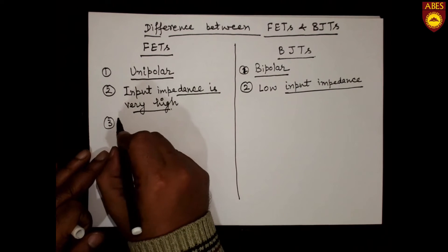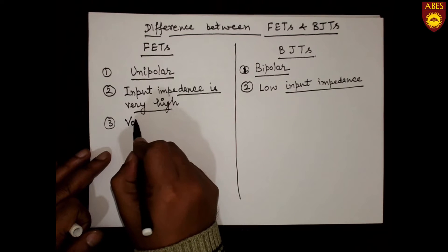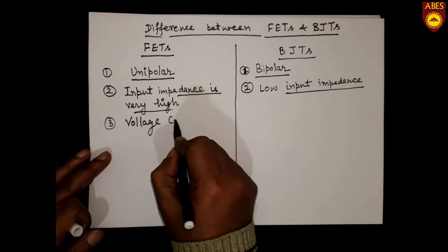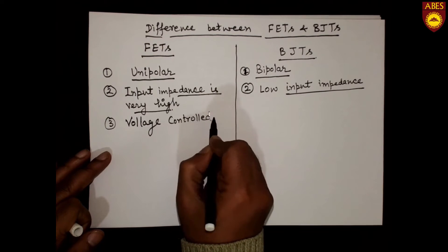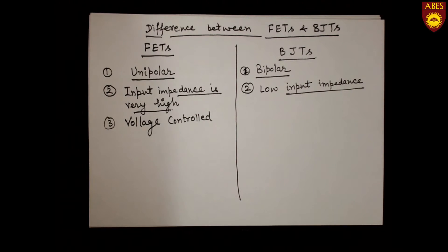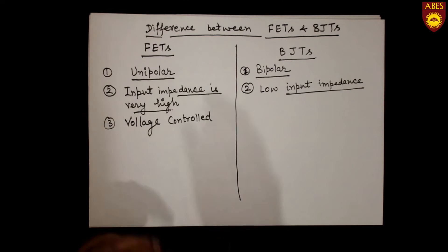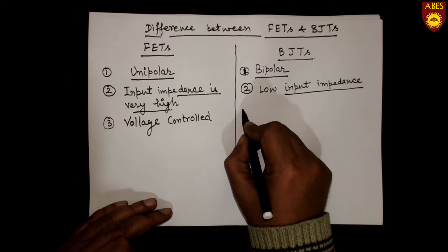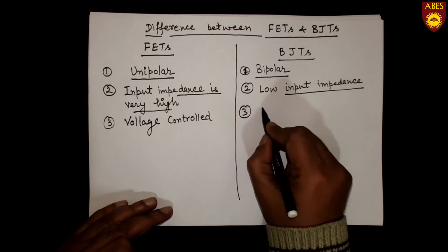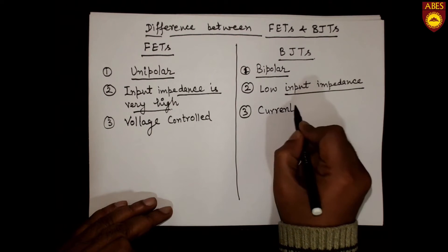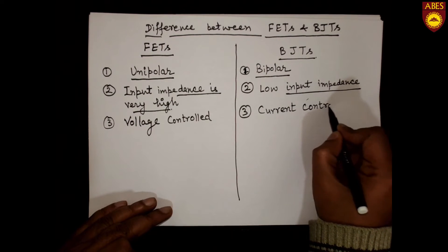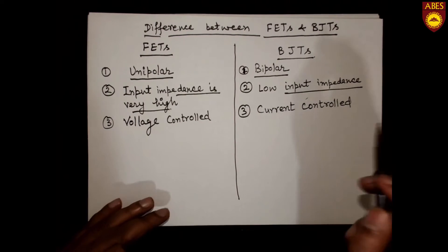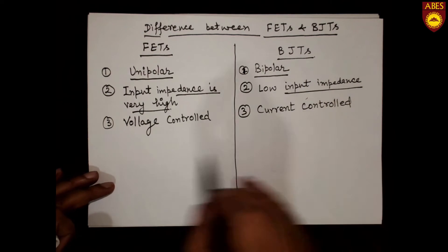The third difference is that FETs are voltage-controlled or field-controlled devices. As the name 'field effect transistors' suggests, the output depends on the applied electrical field. In contrast, BJTs are current-controlled devices, meaning the output depends on the input current.